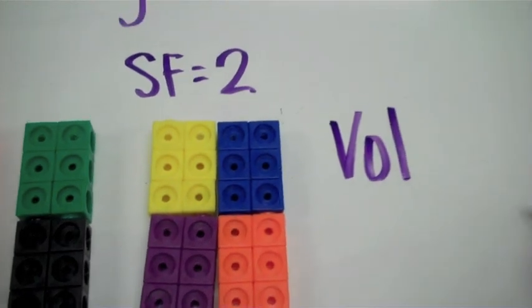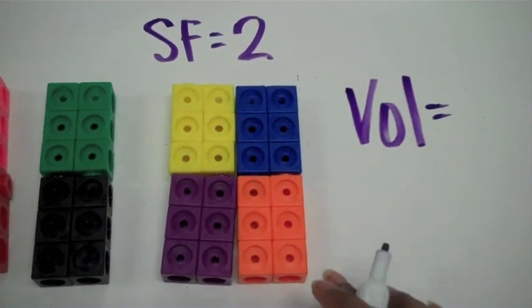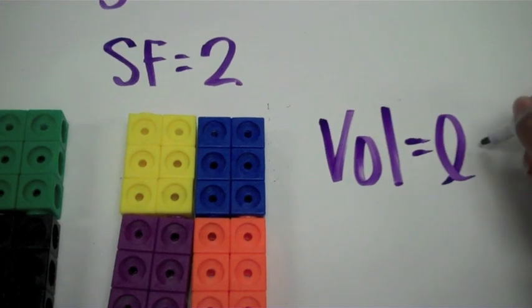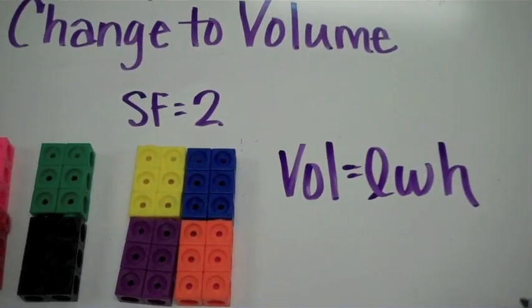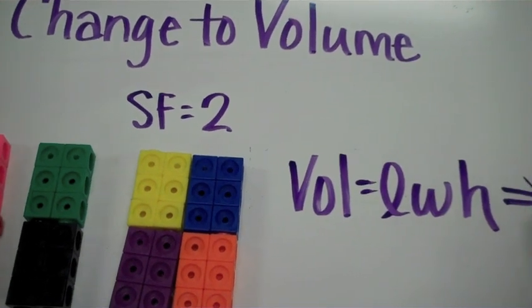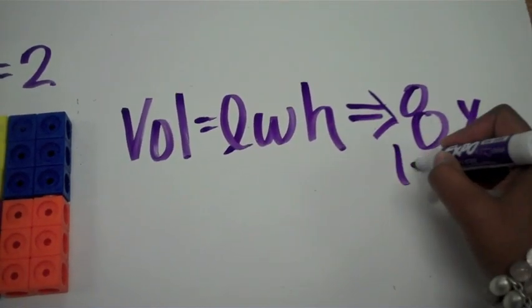Volume is area of the base, which in this case a rectangular prism is length times width. And then we multiply that by the height. When I just applied a scale factor of 2, my volume got 8 times larger.